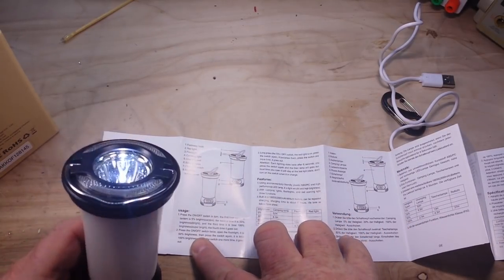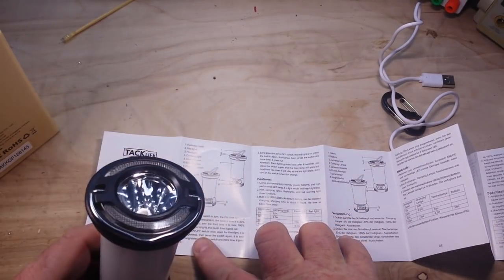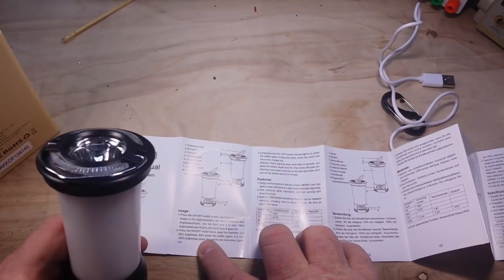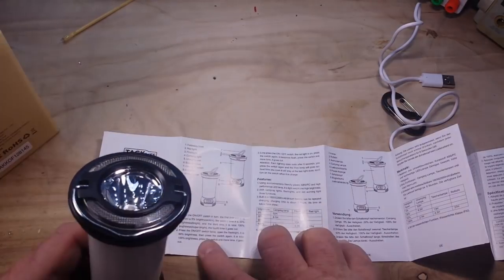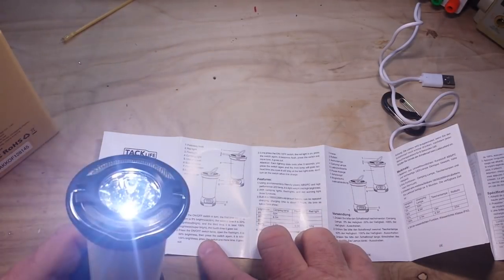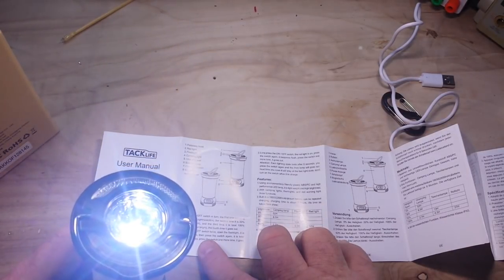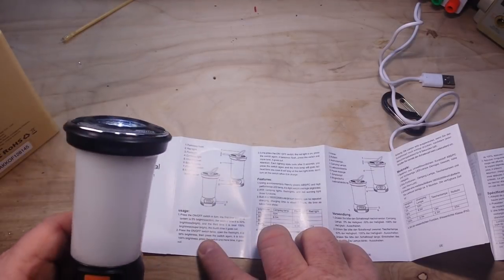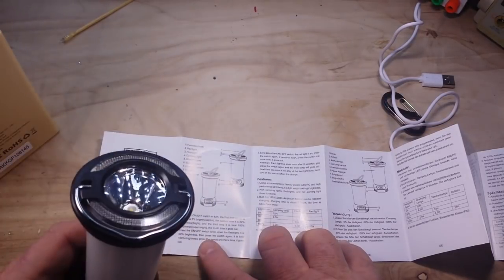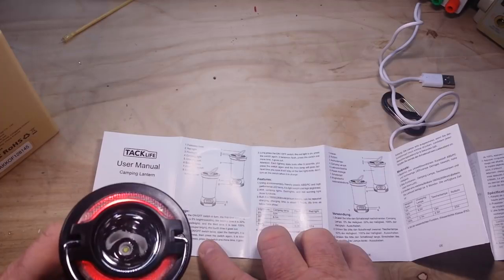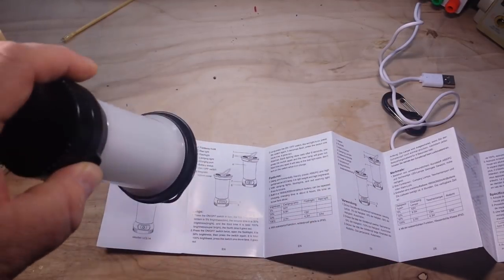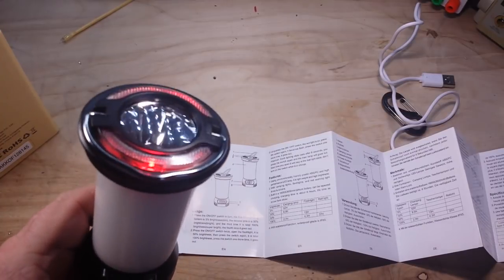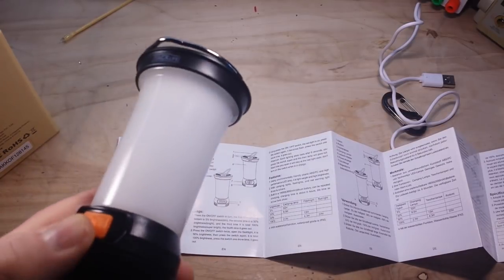That's fifty percent. Press it again, flashlight. Then long press on-off and we have a red light which is good for map reading and such at night.